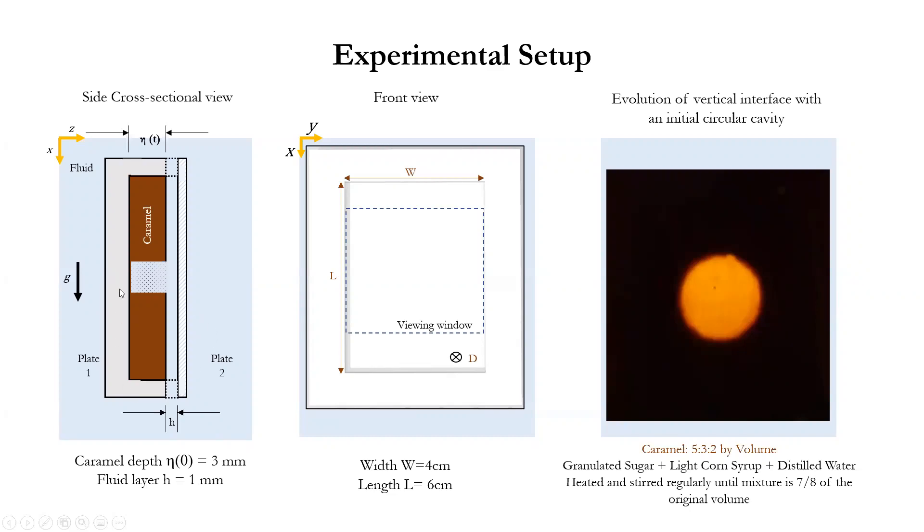So here is a cross section of what that looks like. As the caramel dissolves, the dissolved mixture is heavier than fresh water and sinks. As a result a convection current is created because of this dissolution, and to focus on the local flow and to help imaging processes we create a second plate, a second transparent plate, and put it a height one millimeter away from the surface of the caramel so we can limit the flow as just being within there.